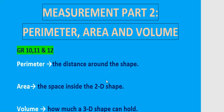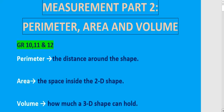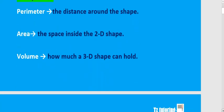What is perimeter? Perimeter is the distance around the shape. The area is the space inside a 2D shape. And how much a 3D shape can hold would be your volume or capacity — the capacity of a 3D shape. Let's put that to application.